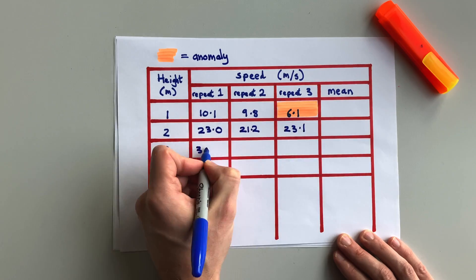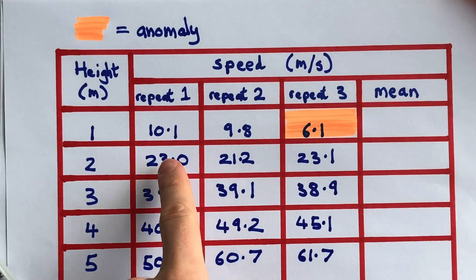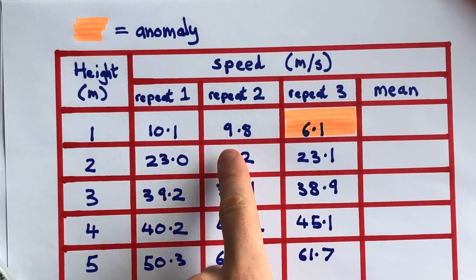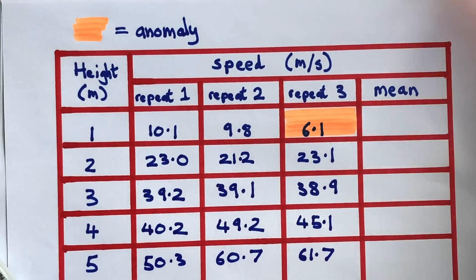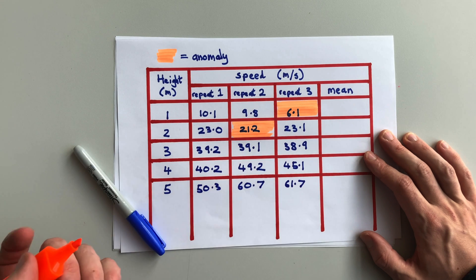Let's look at some different examples. In this next row, 23.0 and 23.1 are close together, and 21.2 is the odd one out. In the third row, all three numbers are close together, so there's no anomaly.